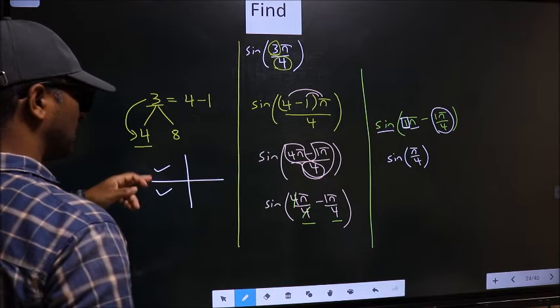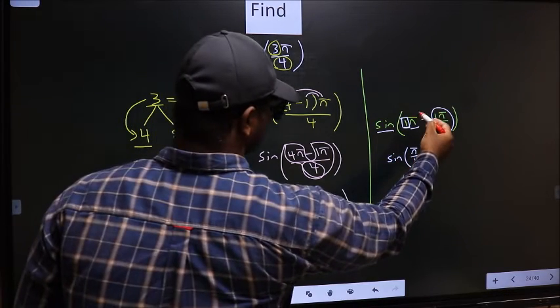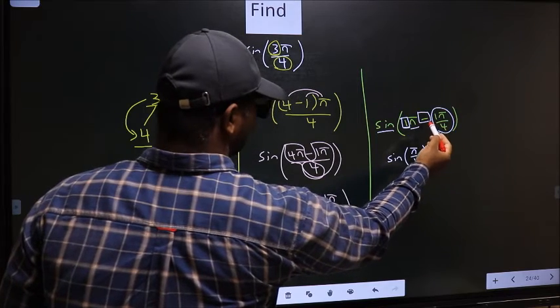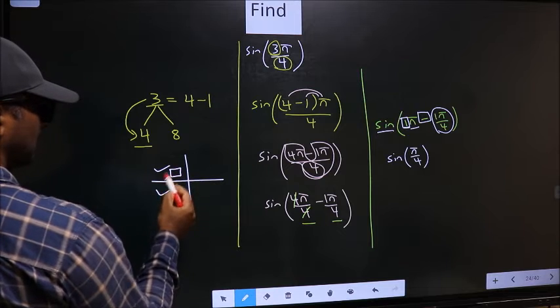Now to decide in which quadrant does the angle lie, we should look at this symbol. Here we have negative. That means the angle lies in the second quadrant.